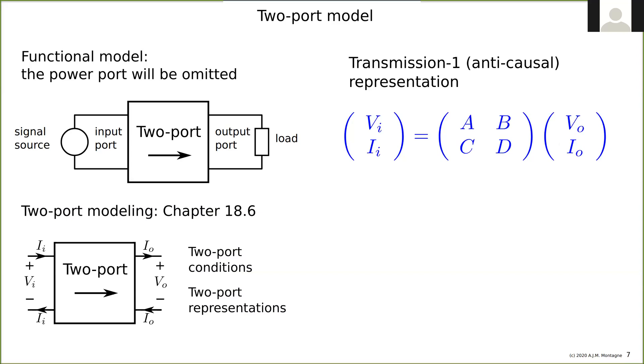We will find later on that this will be the case under certain conditions. So A times D must be B times C. Then it will be a unilateral two-port. You can also find that in the book. This has nothing to do with the physical behavior, and you can measure it like this theoretically.